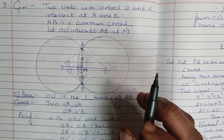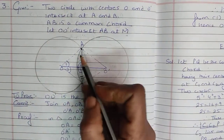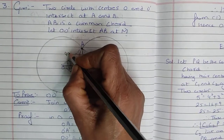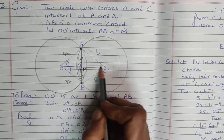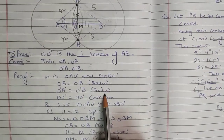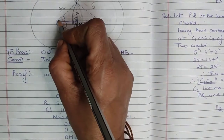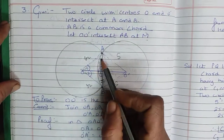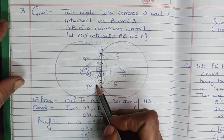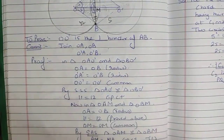For construction, join all four points to both centers. Take the upper triangle and the lower triangle and prove them congruent. In each, OA and OB are radii of the first circle, O'A and O'B are radii of the second circle — by SSS congruency both triangles are congruent. From CPCT we get angle 1 equals angle 2. Next, take the upper half and lower half triangles: two sides are radii, the center line OO' is common, and angle 1 equals angle 2. SAS rule gives congruency.